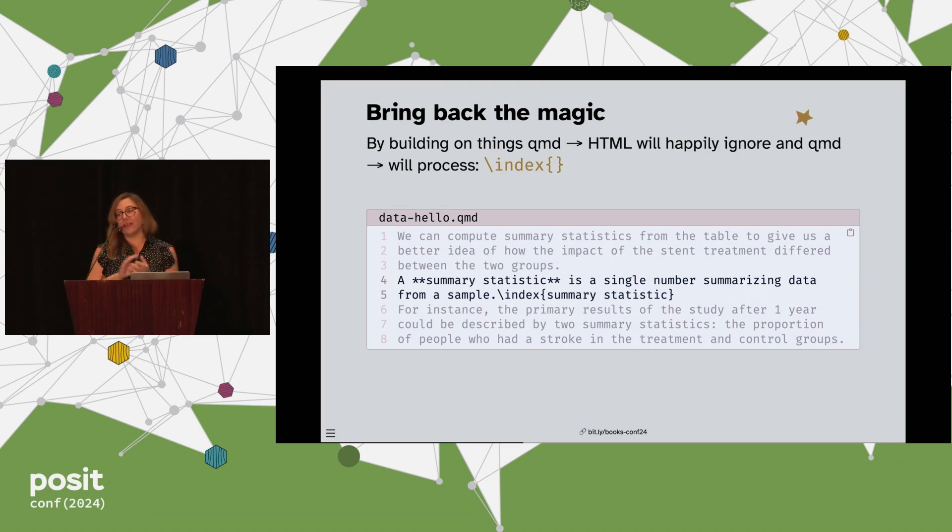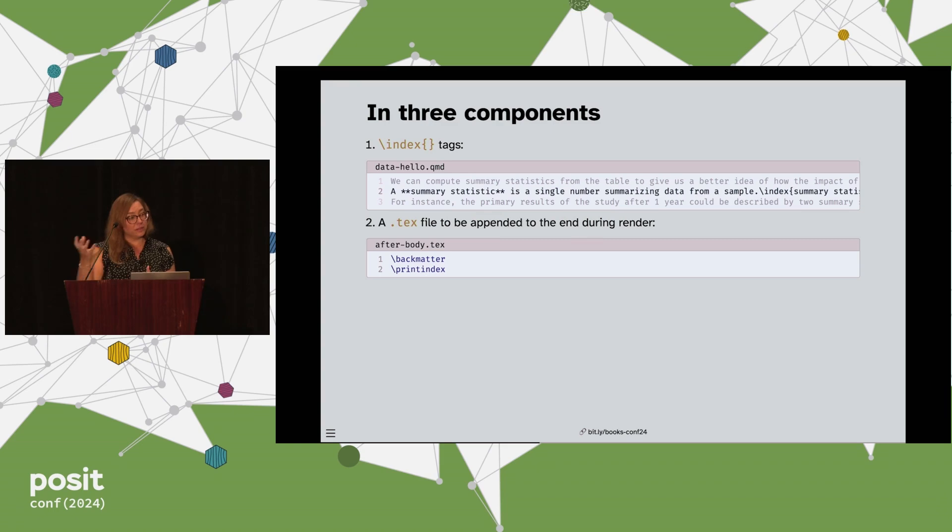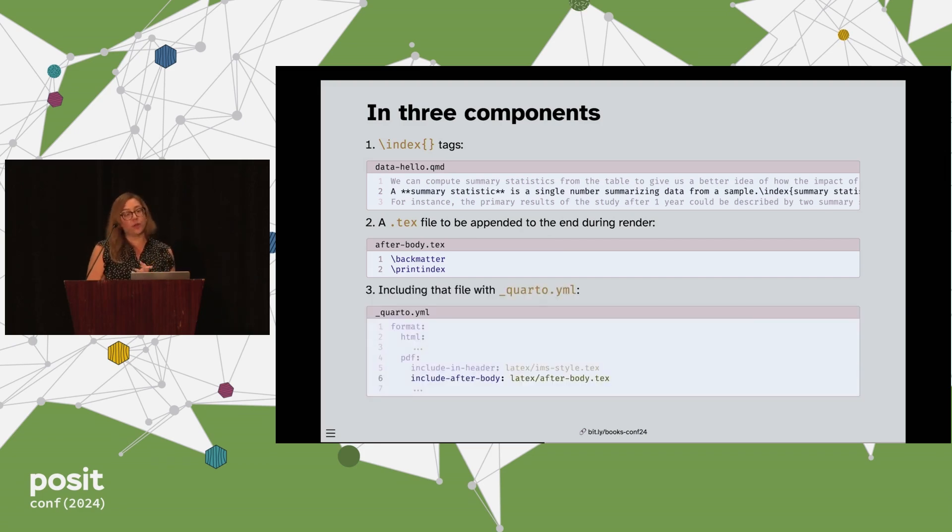Now let's bring back the magic. The fact that QMD to HTML process will ignore things that it has no business means I can continue to litter my QMD document with index tags. So here, for example, I'm defining a term that in the HTML format I just want bolded. But when I have a PDF output, for the printed book, I actually want to make an index. So I tag that. In addition to tagging this throughout, which is a manual process that you as the author are going to want to do for the things you want in your index, you then write a .tex file that is going to be included at the end of the processing of your PDF that basically says in the back matter, print index. Then your Quarto YAML gives you a place to declare that as well. When you render to PDF, Quarto will actually take a little bit longer and render things twice to get the page references correctly for all your index calls.